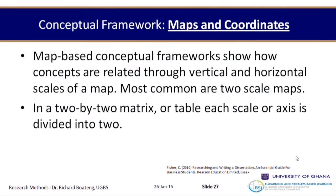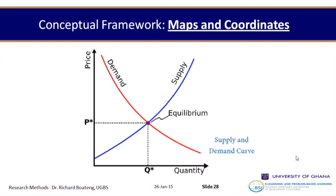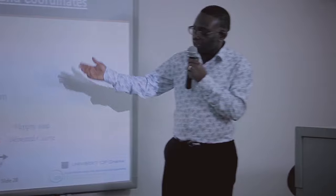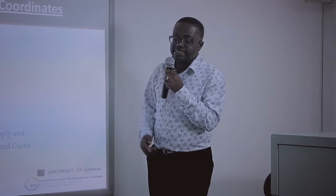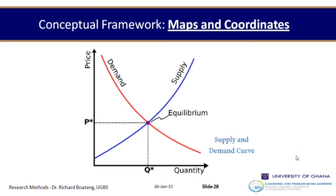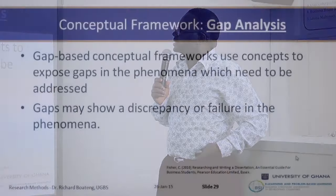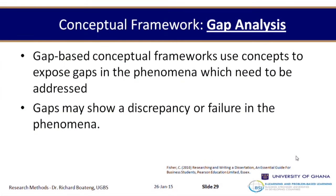Sometimes conceptual frameworks are shown as maps and coordinates, illustrating how variables relate together. A very common example is the demand and supply curve from economics — quantity on one axis, price on the other, with an equilibrium point — used to understand how market systems work. There is also gap analysis, which shows a discrepancy between one thing and another.